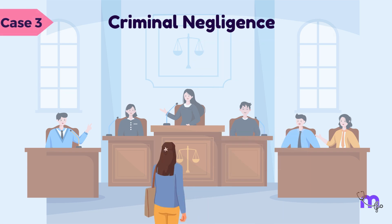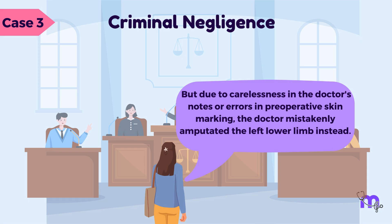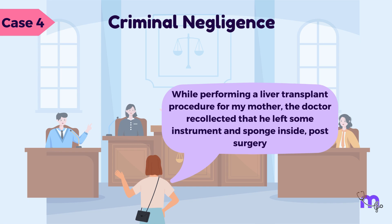To understand this, let us consider a case which required amputation of the right lower limb of a patient. The doctor, due to carelessness in his notes or errors in preoperative skin marking, instead amputates the left lower limb. This is an act of criminal negligence. Imagine another scenario where the doctor is performing a liver transplant surgery, but after closing up on the patient, they realize they have left a certain instrument or sponge within the body of the patient. This is another example of negligence which could result in a criminal lawsuit.